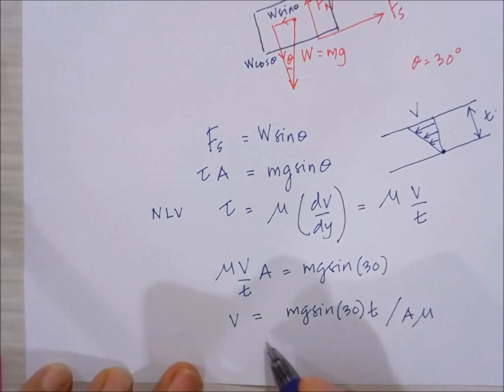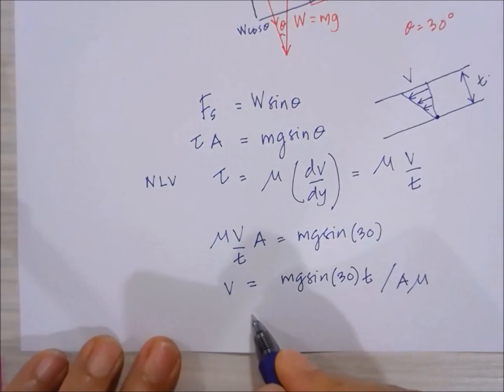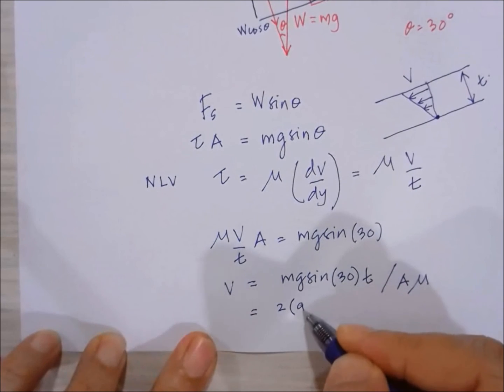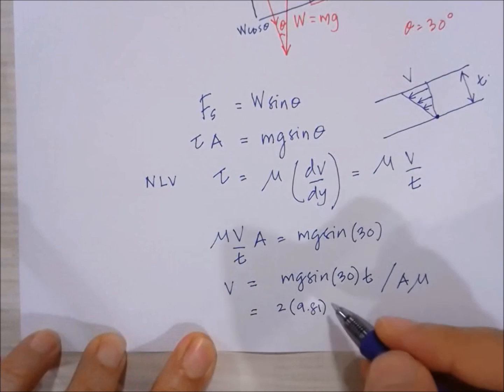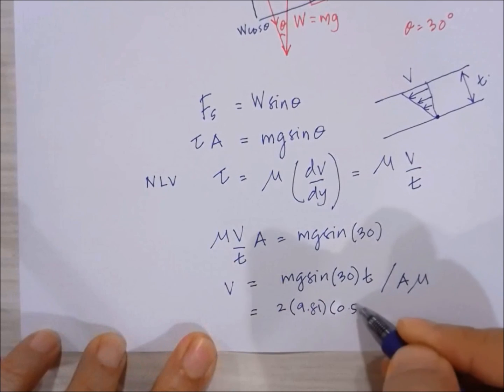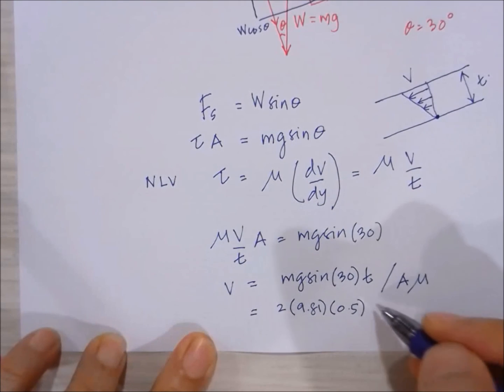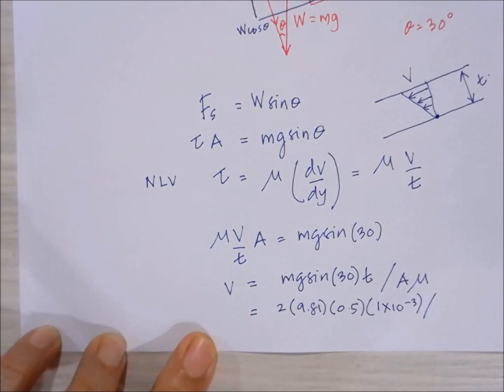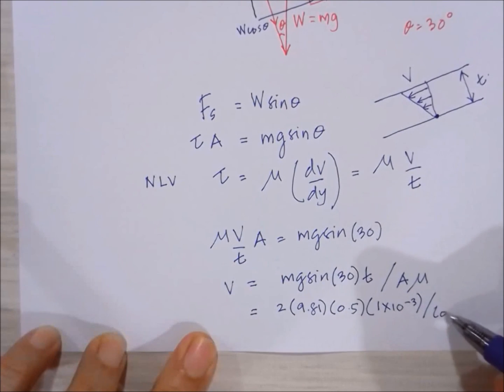If we substitute the values, we have this equal to 2 times 9.81 sin 30, which equals 0.5, and the thickness of the lubrication oil is 1 times 10 to the minus 3 divided by the area. Area is 0.2 multiplied by 0.5 multiplied by mu. Mu is given to be equal to 0.25.